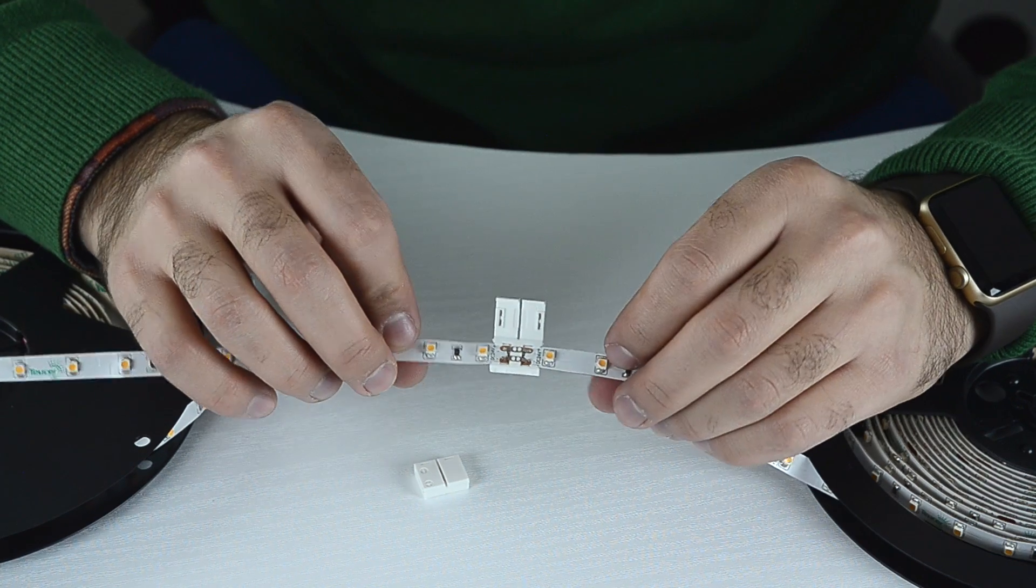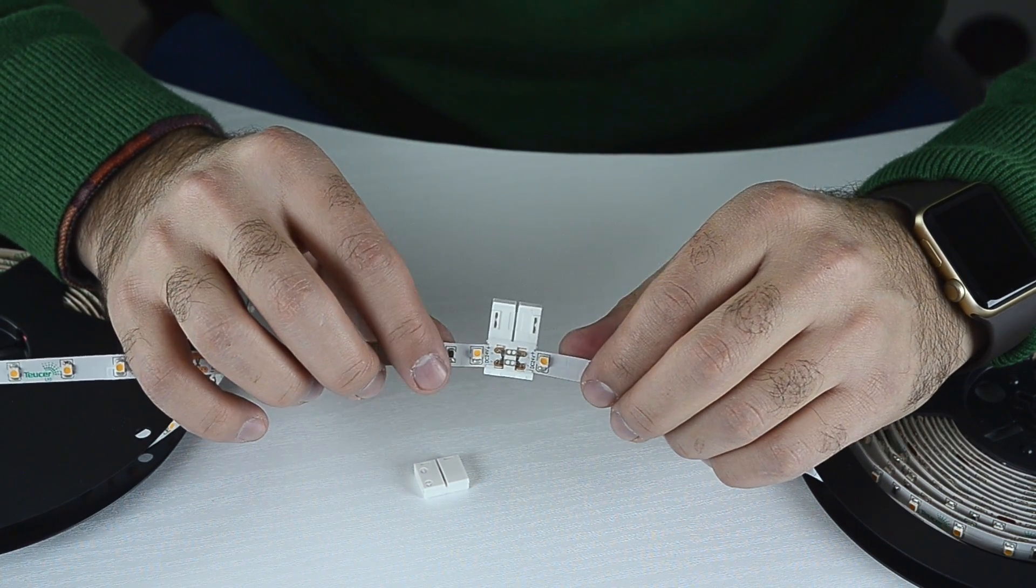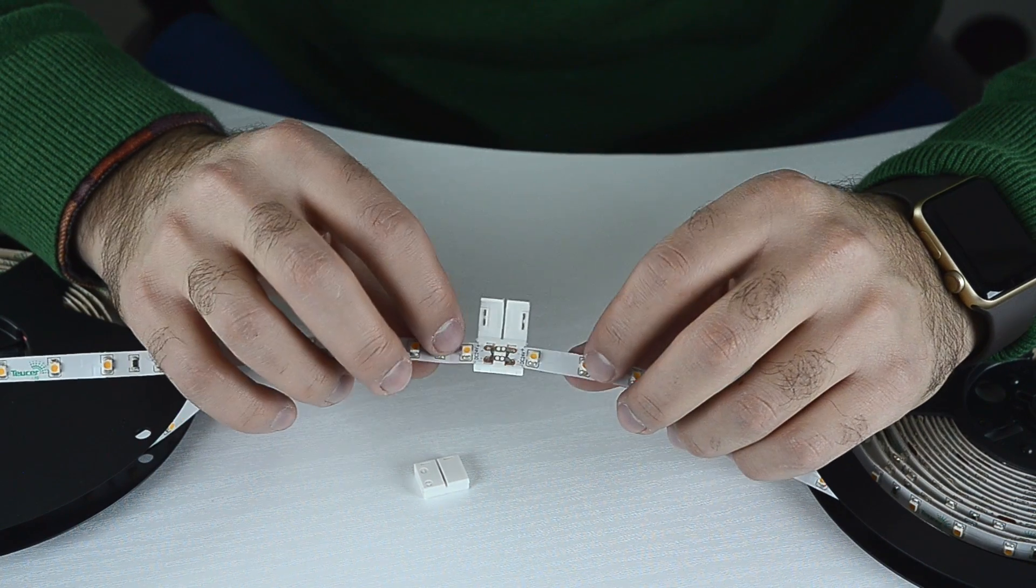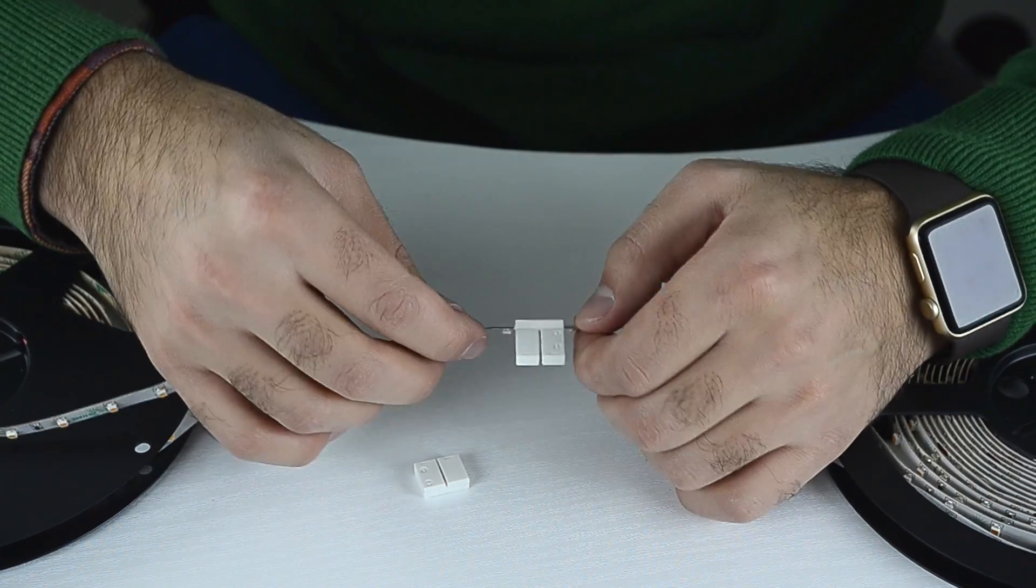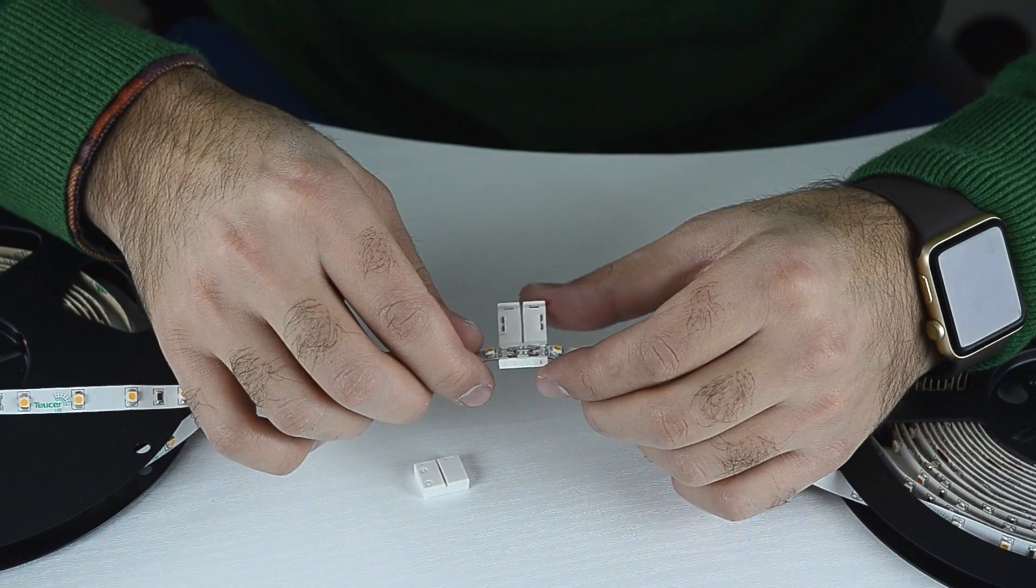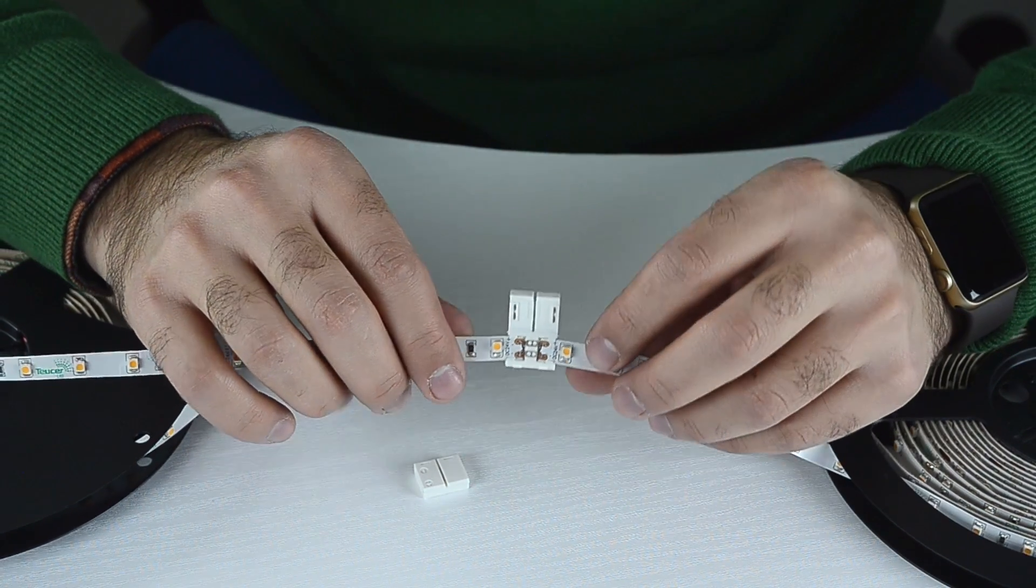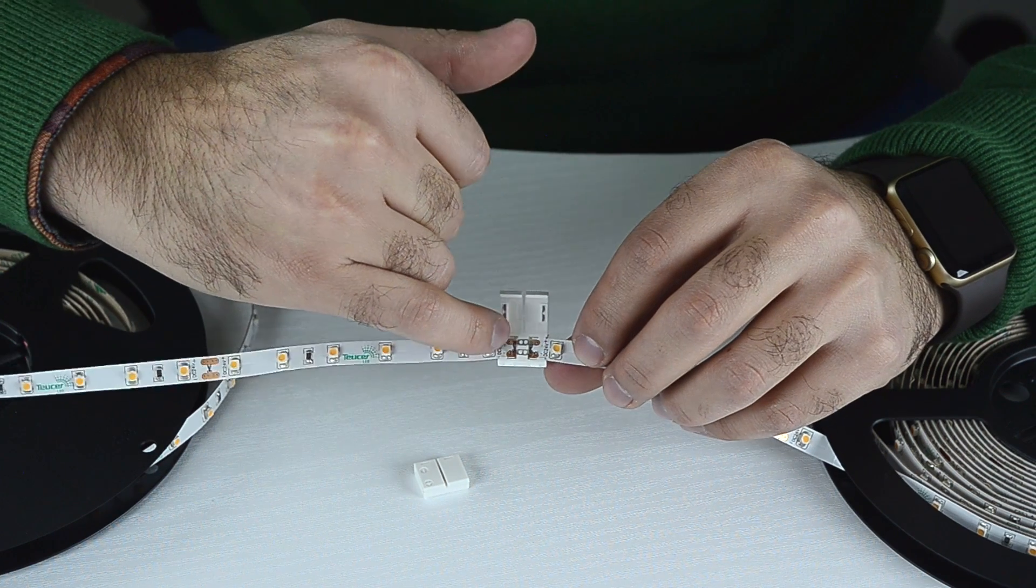When inserting the strip into the connector, make sure that the positive and negative of the strip match positive and negative polarity of the connector. You need to ensure the silver clamps are placed securely on top of the copper connection points on the strip.